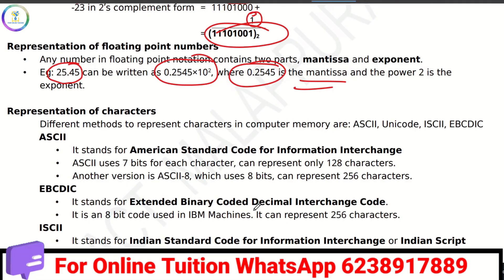Characters are represented using ASCII, Unicode, ISCII, and EBCDIC. ASCII is the American Standard Code for Information Interchange. Using 7-bit, it supports 128 characters; using 8-bit, it supports 256 characters.